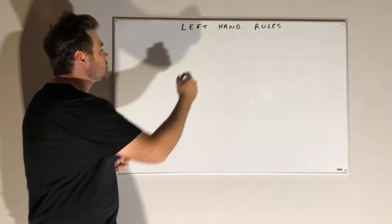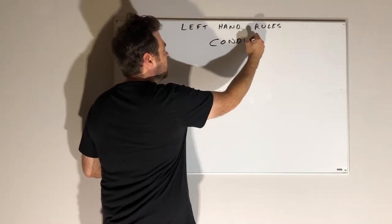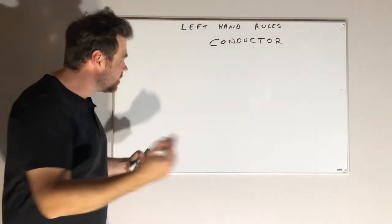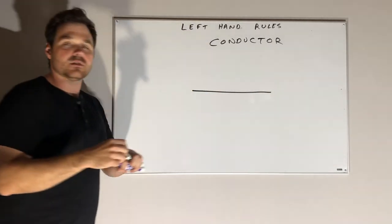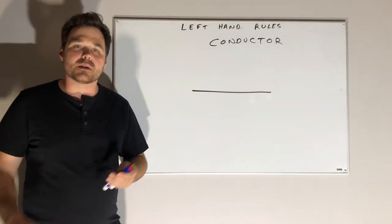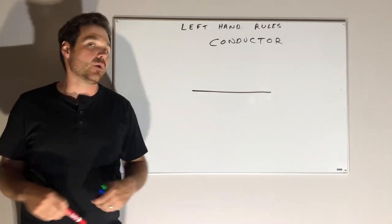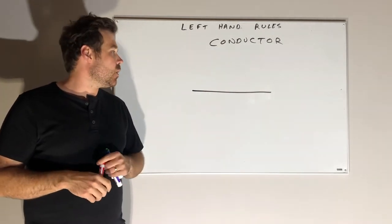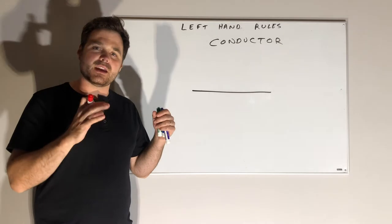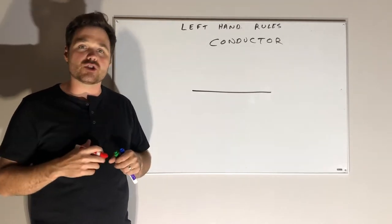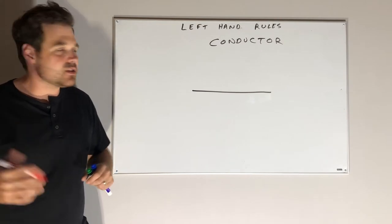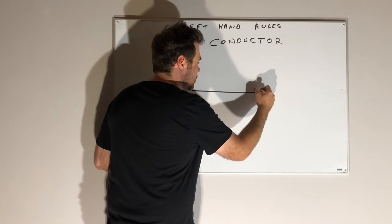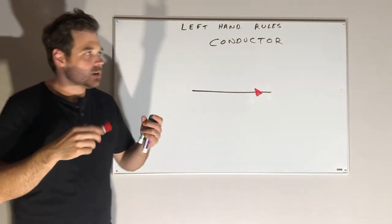So to start off, let's start with our left-hand conductor rule. I've got a conductor - copper wire probably, something like that. I'm going to have current flowing through that conductor. In AC we know it's flip-flopping back and forth; DC kind of going one way. But usually when we're talking electrical theory we're talking at a snapshot in time. So let's just say that in this snapshot of time, current is flowing that direction.